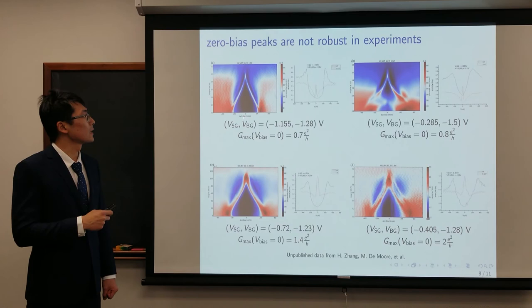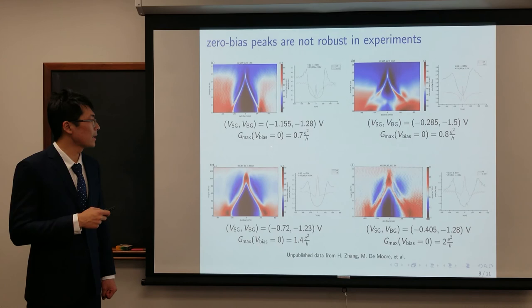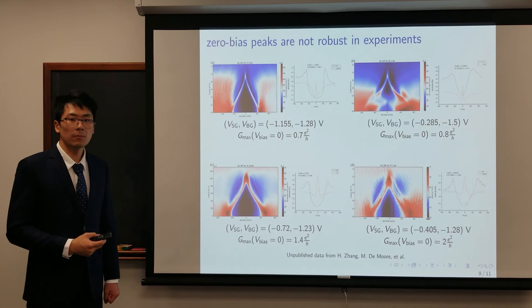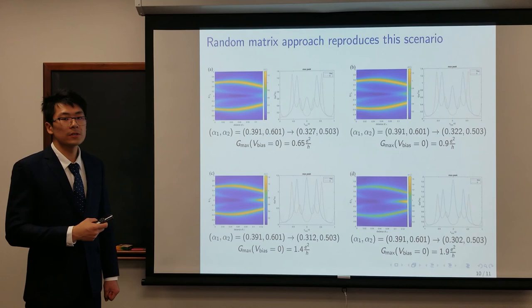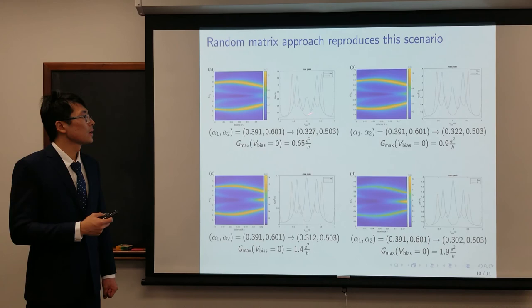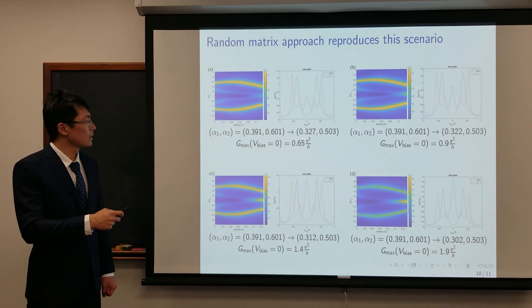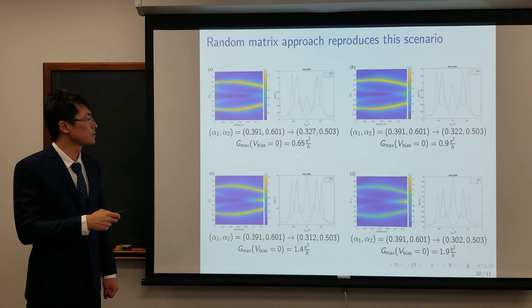We also find that conductance of zero-bias peak is not robust in experiment too. The conductance will change greatly from 0.7e²/h to 2e²/h, even within a very small parameter space spanned by the super gate and back gate voltage. If it is a real Majorana, then it should be very robust if the gate voltage only changes slightly. These unstable zero-bias peak features are also reproduced by our random matrix theory. Here we choose four paths which start the same but only differ slightly in the endpoint here. We find that conductance also changes greatly from 0.65e²/h to 1.9e²/h.